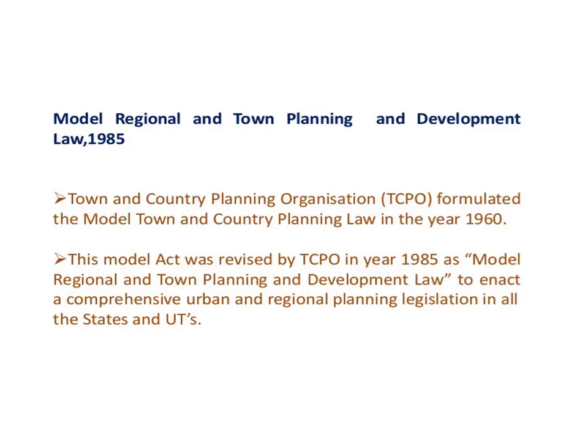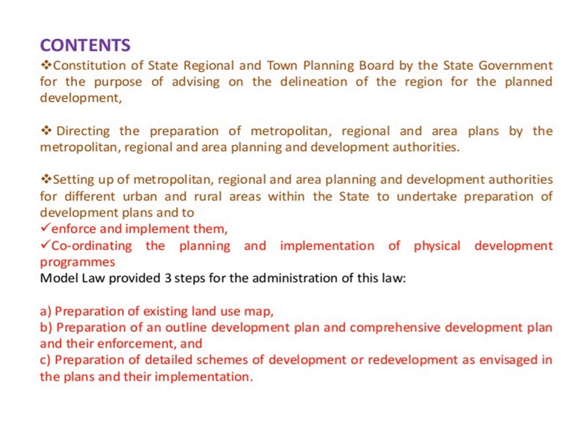The Town and Country Planning Organization formulated the model town and country planning law in 1960. This model act was revised in 1985 as the Model Regional and Town Planning and Development Law, to enact a comprehensive urban and regional planning legislation in all states and Indian territories. The functional integration refers to the integration of all kinds of socio-economic activities directly influencing the welfare of people, such as medical, education, agriculture, transportation and communication, offering proper coordination between social and economic activities dependent on their location.